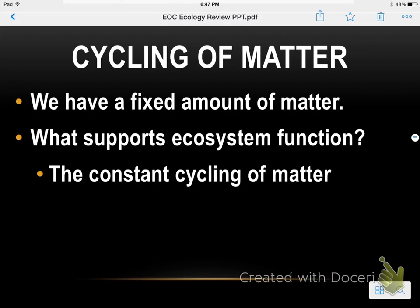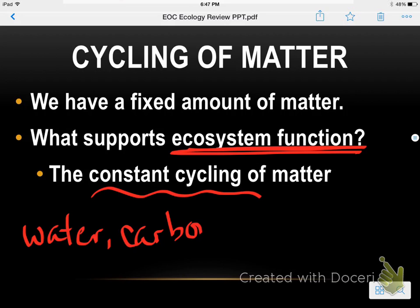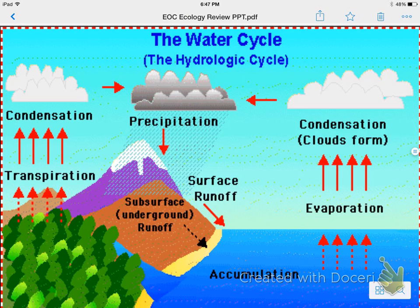Cycling of matter: we have a fixed amount of matter, so what supports ecosystem function is this constant cycling. There are four major cycles: water, carbon, nitrogen, and phosphorus. For the water cycle, you might want to start pausing and reviewing here. This is the most basic one you need to know — the arrows show you how everything flows.